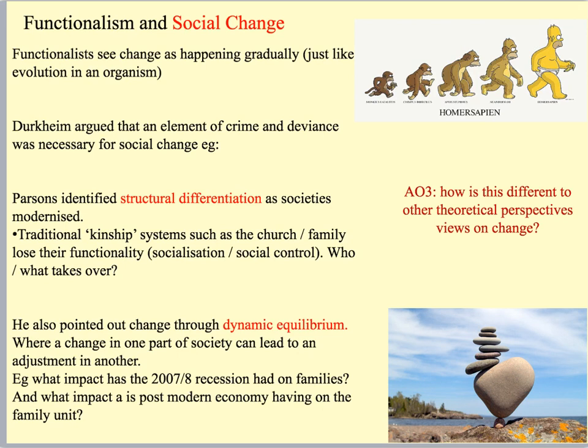I want to talk briefly about the functionalist view on social change, because it's quite useful to contrast with conflict theories. Functionalists argue that social change does happen, but it happens really gradually — they're not a massive fan of rapid social change. They look at social change as happening really gradually, just like evolution within an organism. Over time, bodies and organisms adapt to their surroundings, but it happens so slowly we can barely see it.